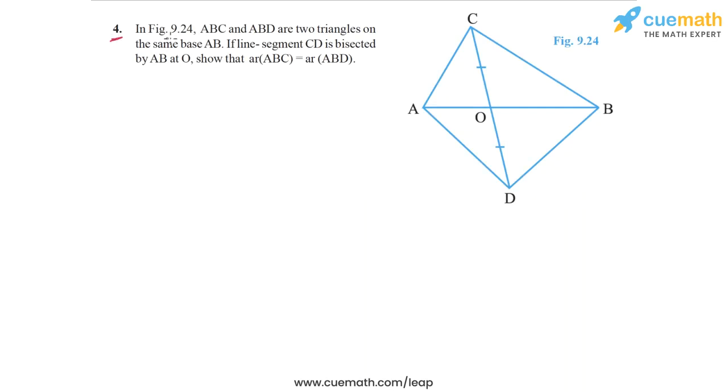The problem statement in question 4 says that in the given figure 9.24, ABC and ABD are two triangles on the same base AB. Let's highlight the base. This base AB is common for the two triangles ABC and ABD.